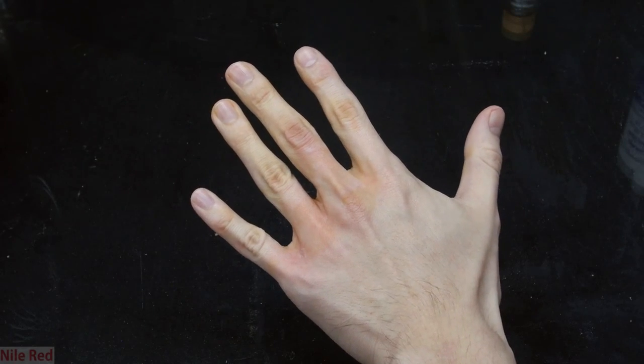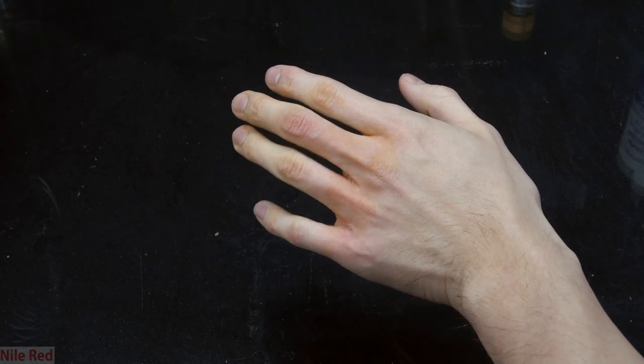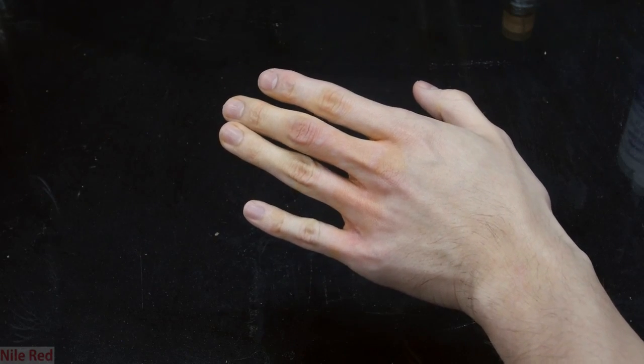This is my hand and you can see that it's a little bit red but there's a lot of yellow. As I said before, nitric acid reacts with keratin in your skin and when it does this, it turns it yellow.